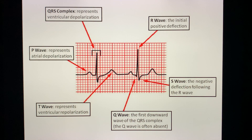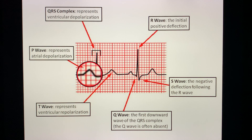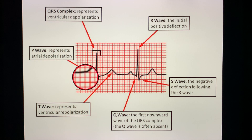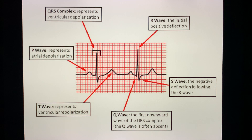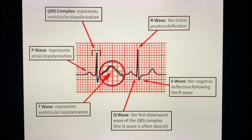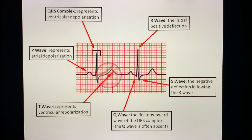Here is a nice illustration. This is the P wave, which represents atrial depolarization. The QRS complex is ventricular depolarization. Then we have the T wave, which represents ventricular repolarization.